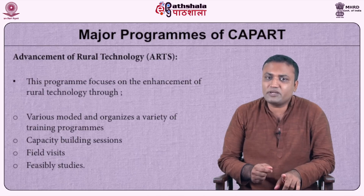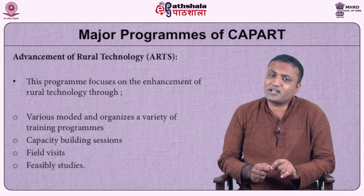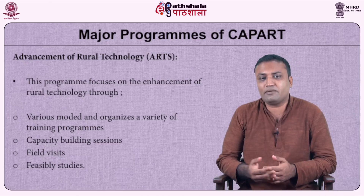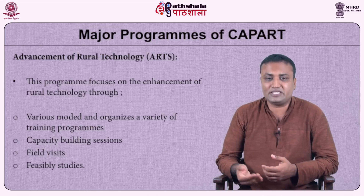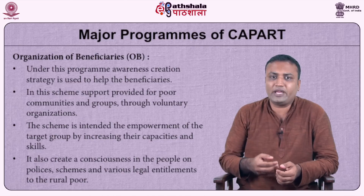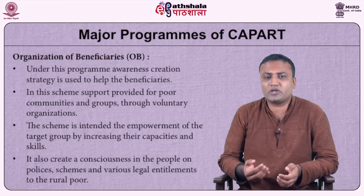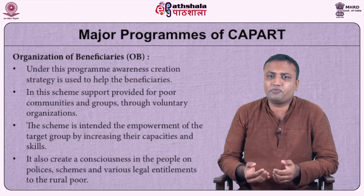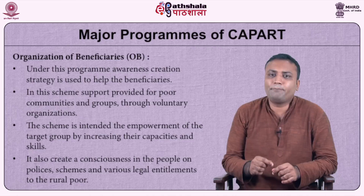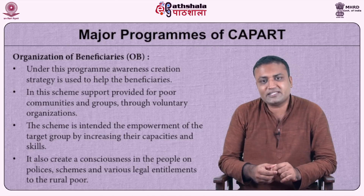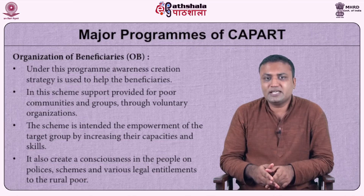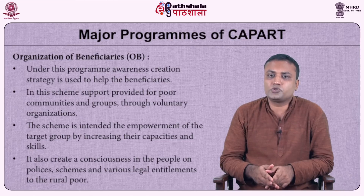The second program is advancement of rural technology, which focuses on the enhancement of rural technology through various modes and organizes training programs, capacity building sessions, field visits, and feasibility studies. The third program is organization of beneficiaries, where an awareness creation strategy is used to help beneficiaries. Support is provided for poor communities and groups through voluntary organizations, empowering the target group by increasing their capacities and skills, and creating consciousness about policies, schemes, and legal entitlements for the rural poor.